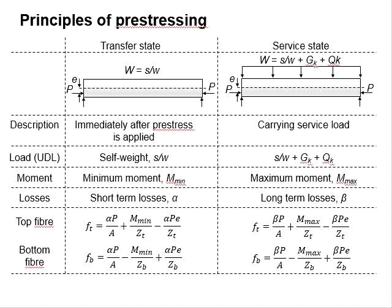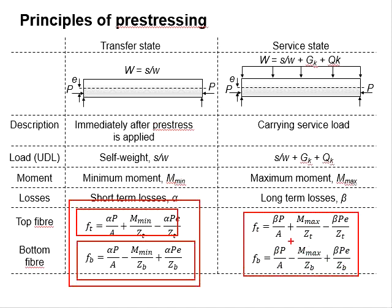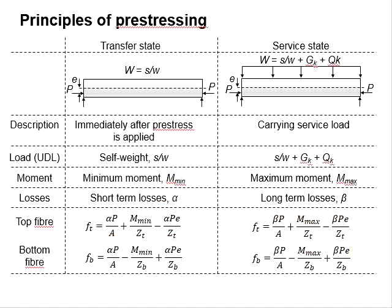To determine the stress in the beam sections, at least four equations are required: two equations at the transfer stage representing the top and bottom of the beam. As the moment may differ along the beam, so does the eccentricity, and it is essential to ensure that the entire beam is within the stress limit.